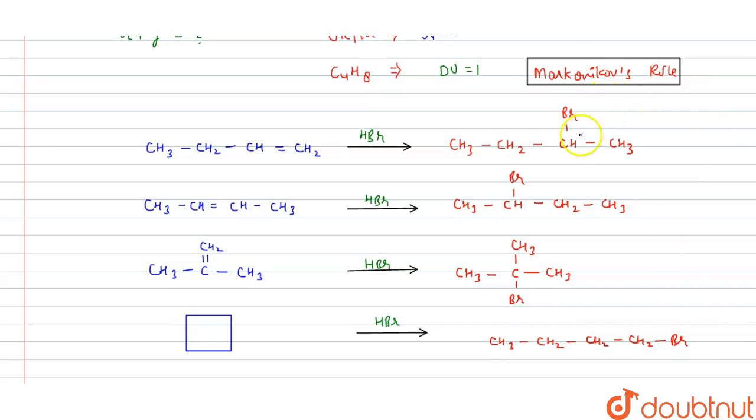Now how many products? This is here, this one chiral carbon. This will make two structures, possible two structures. And for that, this is only one structure is possible. Here only one structure is possible.